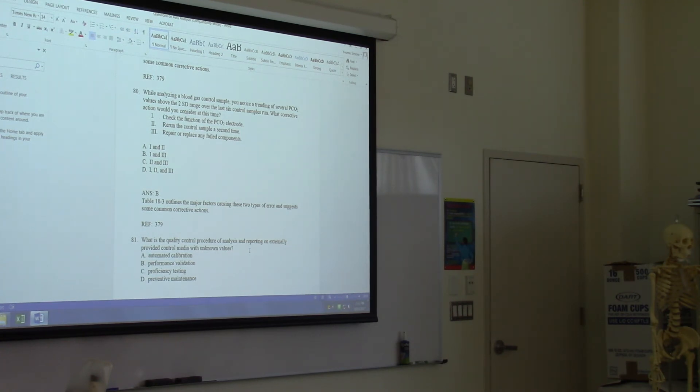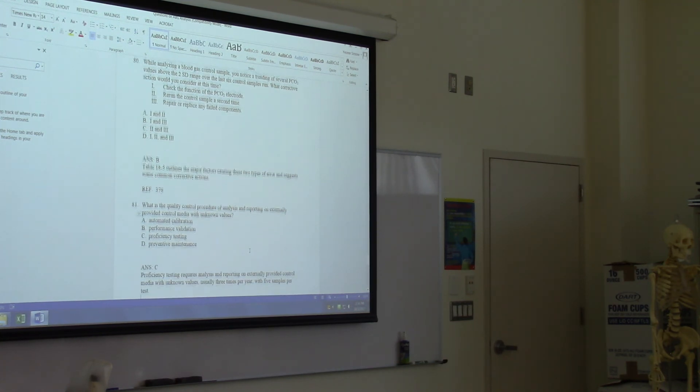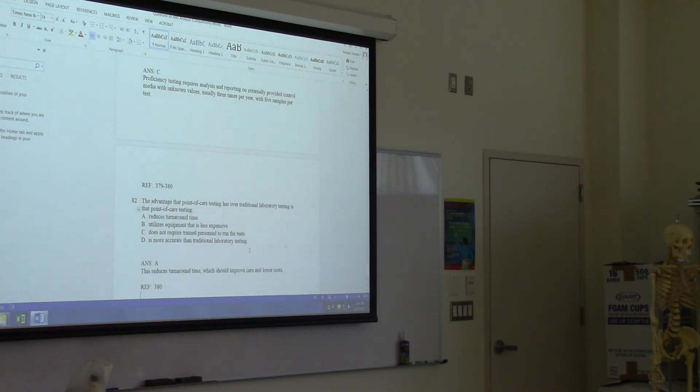What is the quality control procedure of analysis and reporting on externally provided control media with unknown values? Should we pick a fancy word? Performance validation? Automated calibration? Remember the external controls are when the state sends a blood sample to all the hospitals? So that would be proficiency. They all look good. C. All right, are we done yet? How do you come up with so many questions? All right, very good.